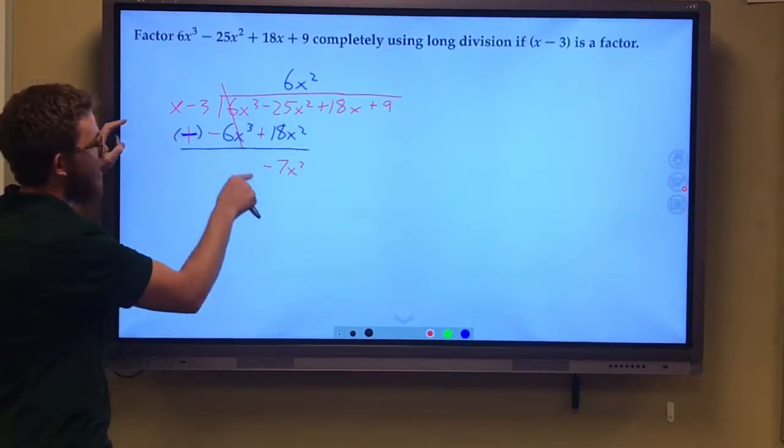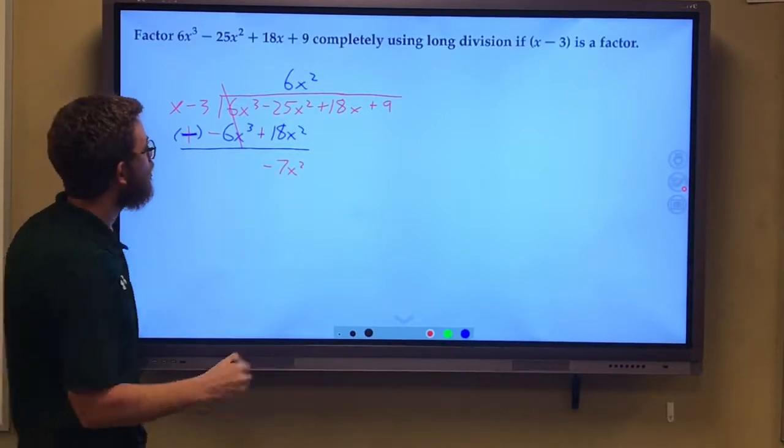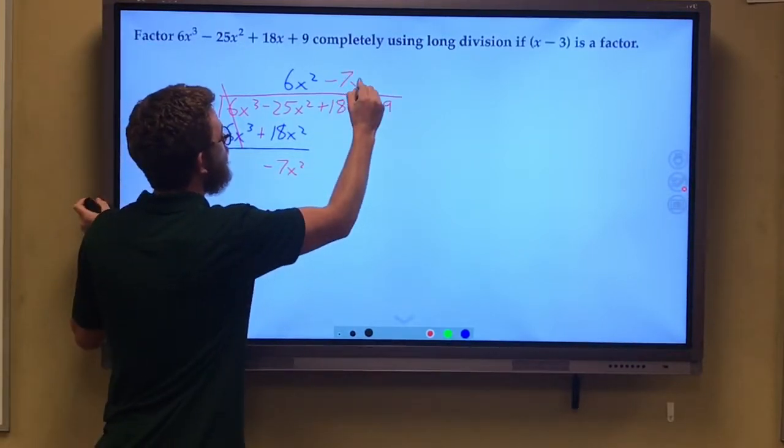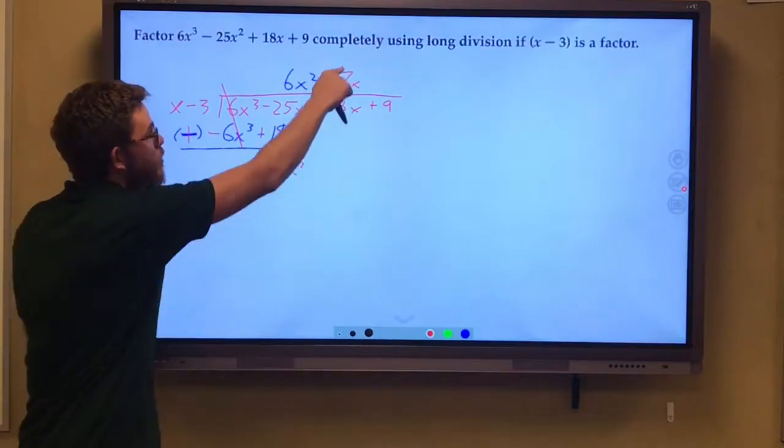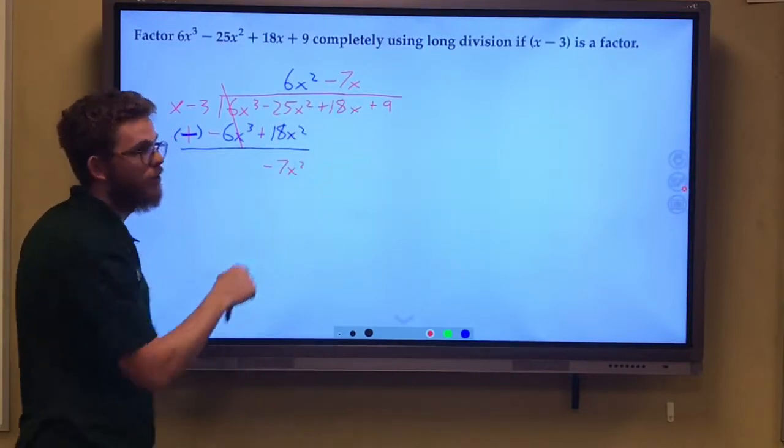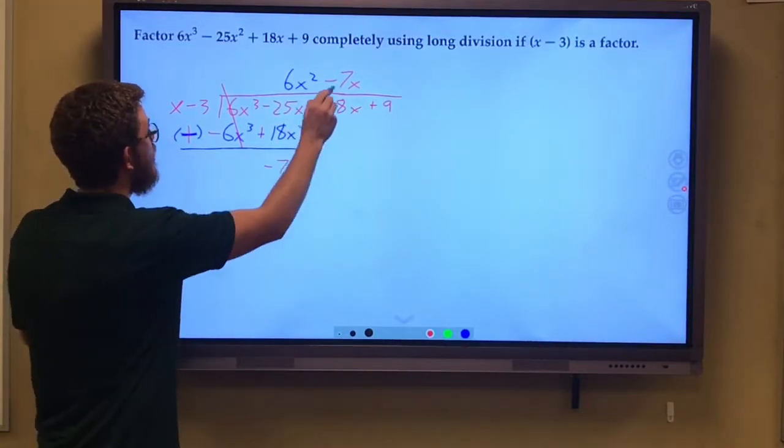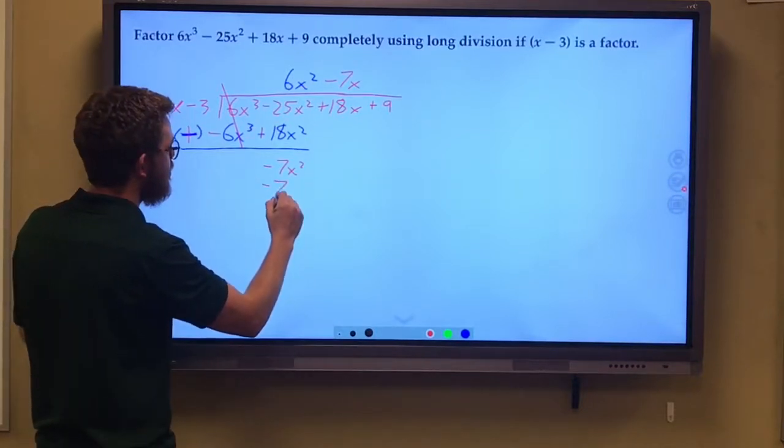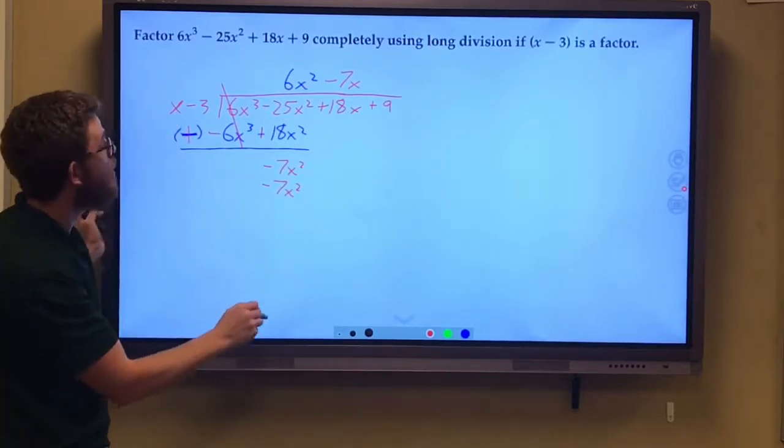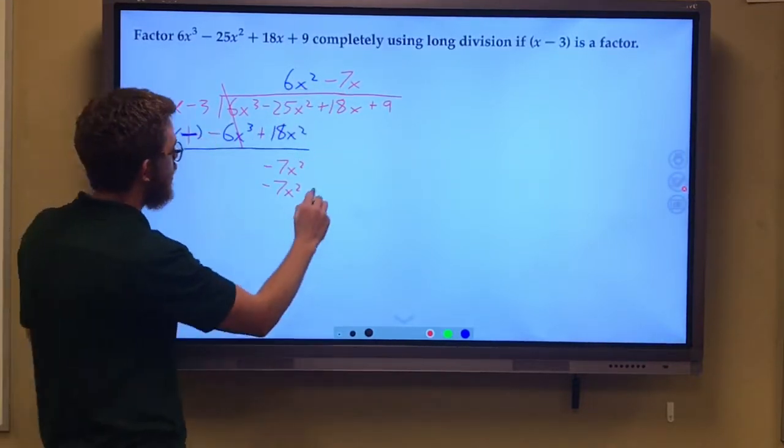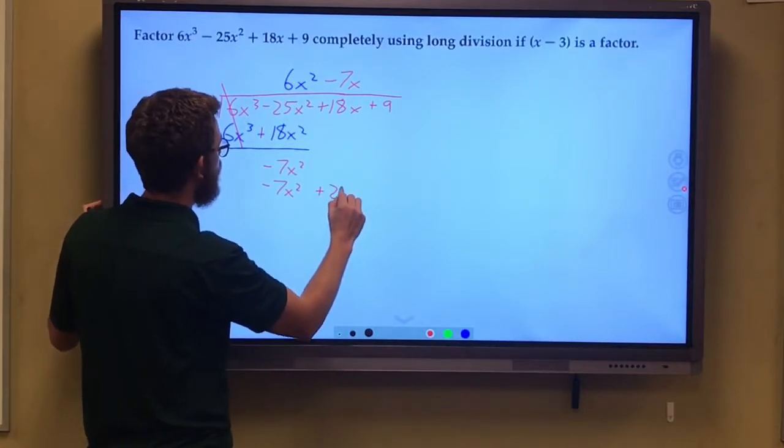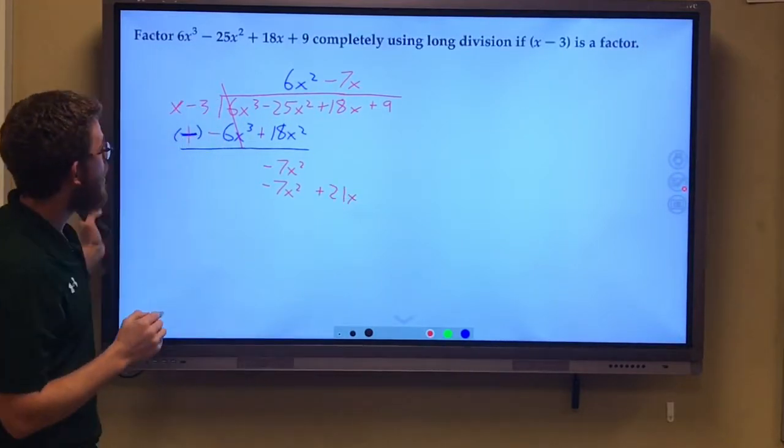Same idea. What times x gives me negative 7x squared? Of course, negative 7x. Again, put it in line over the other term that has an x. Negative 7x times x is a negative 7x squared. Negative 7x times negative 3 is a positive 21x.